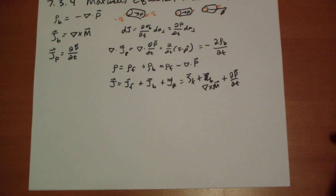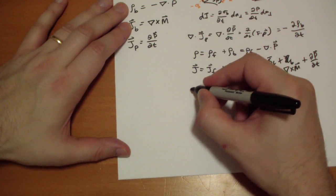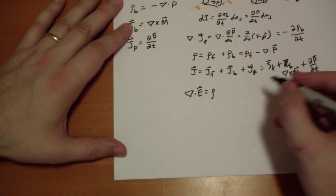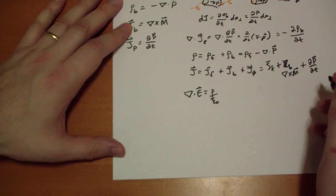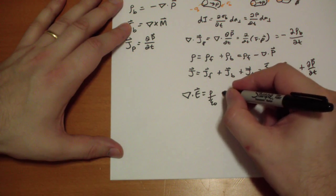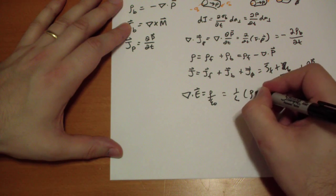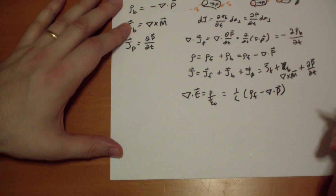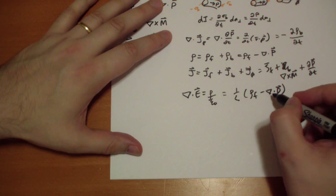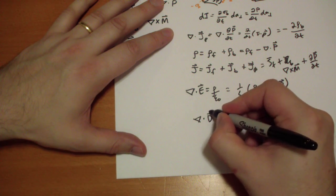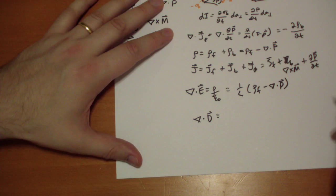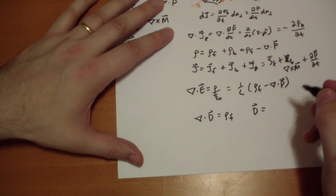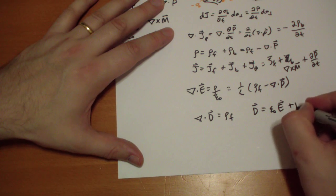So now we have Gauss's law, which says the divergence of the electric field is equal to 1 over epsilon-naught times rho. What's rho? It's 1 over epsilon-naught times the free charge minus the divergence of the polarization. And moving that term to the other side, we have the divergence of the D field is equal to rho_f, the free charge, where the D field is defined as epsilon-naught E-vector plus P-vector.